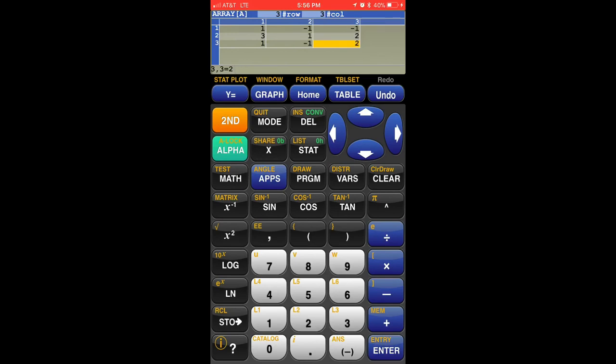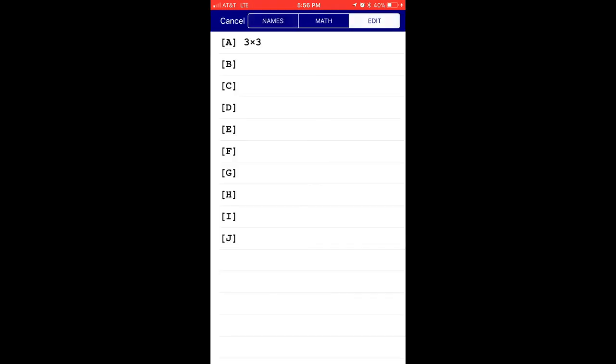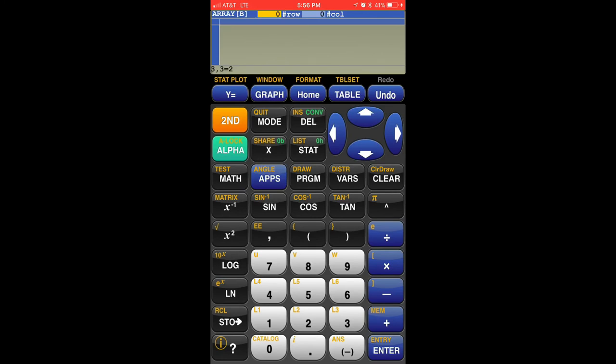Now I'm going to press 2nd and quit and go back to the matrix menu, edit, and create a second column, just like I did before. This one is going to be 3 columns, rows, by 1 column. And that was negative 9, 12, and 0.